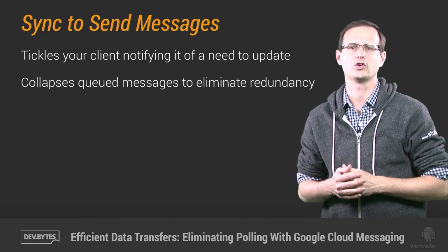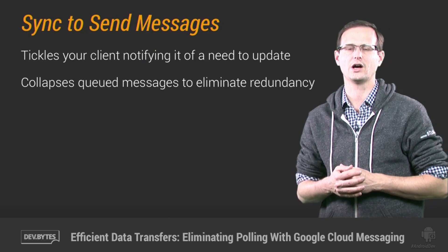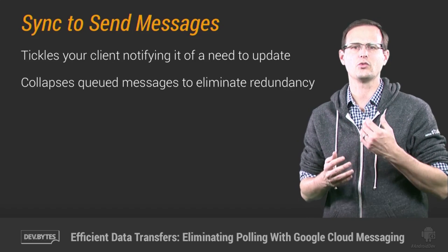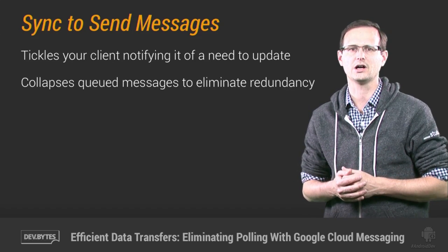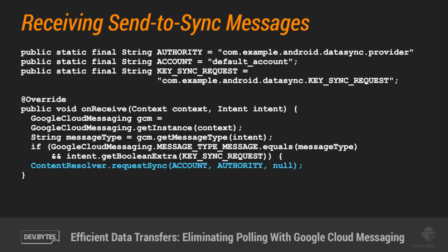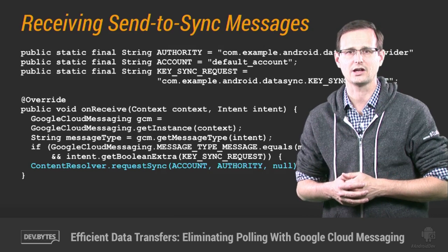For example, if your server notifies your app every time there is a new article or message, it only needs to receive one message telling it that it's time to sync up, which you can do using a sync adapter to initiate the sync. Preferably bundling a number of batch transfers together as described in my DevByte on batching, bundling, and using the sync adapter.